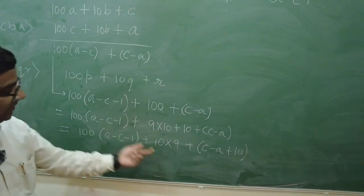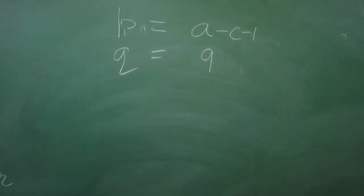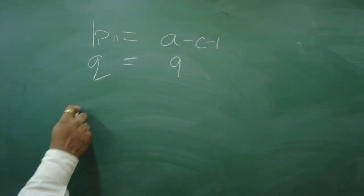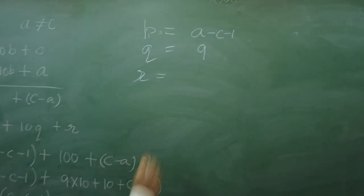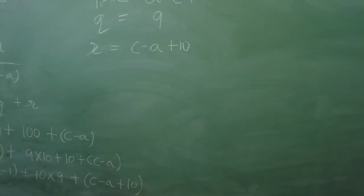Now, obviously, what's Q? Q is 9. Right? And, what's R? If you see, R will be equal to C minus A plus 10. Correct?